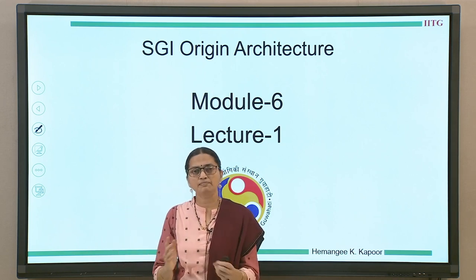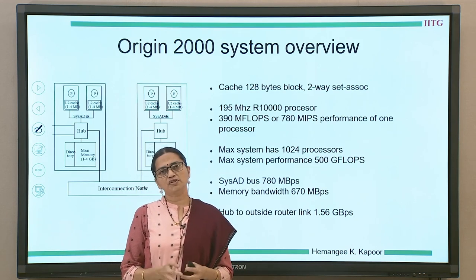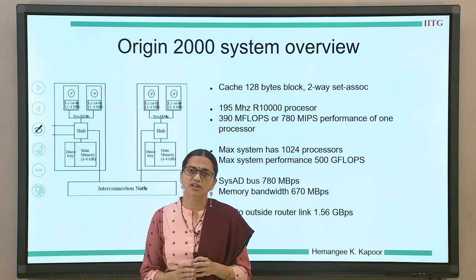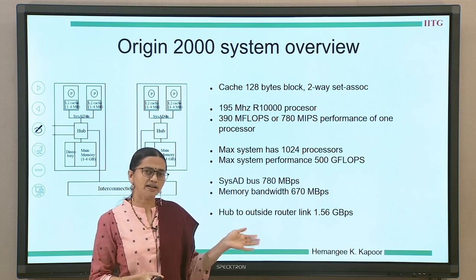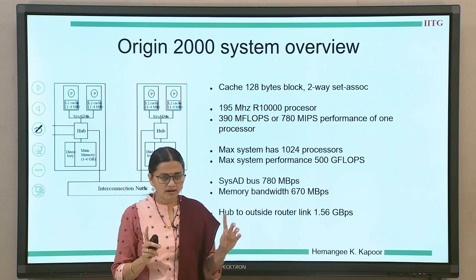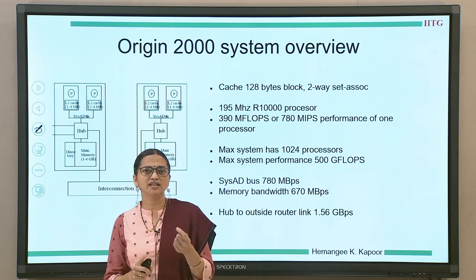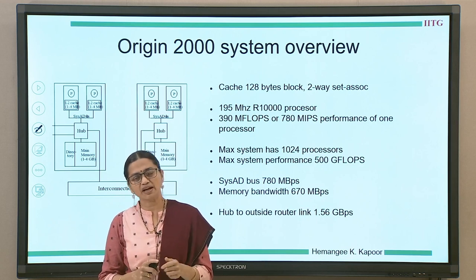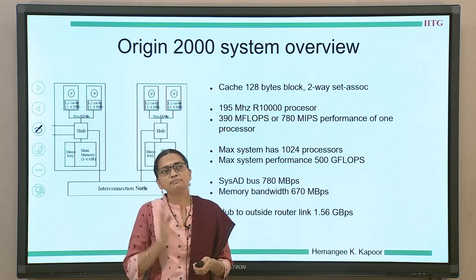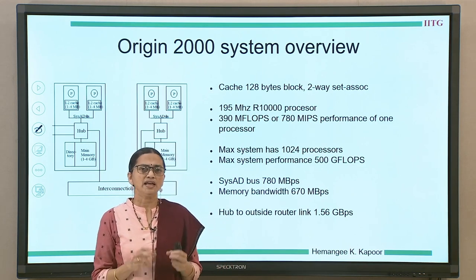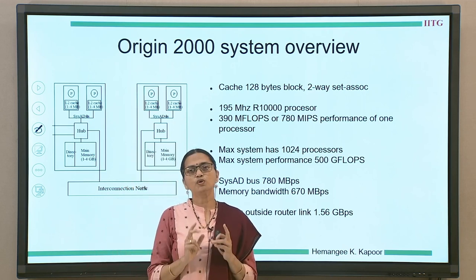The SGI Origin is a slightly older machine, but it gives a flavor of how a directory protocol is implemented in a real system. More advanced versions are implemented in today's processors. We will start with an overview of the architecture, and in the next lecture we will look at how the protocol works. The SGI architecture is made up of one board with two processors. Every processor is the R10000 MIPS architecture. These processors are connected through a system bus but do not implement a snooping protocol, and they connect to the outside world through a module called the hub.